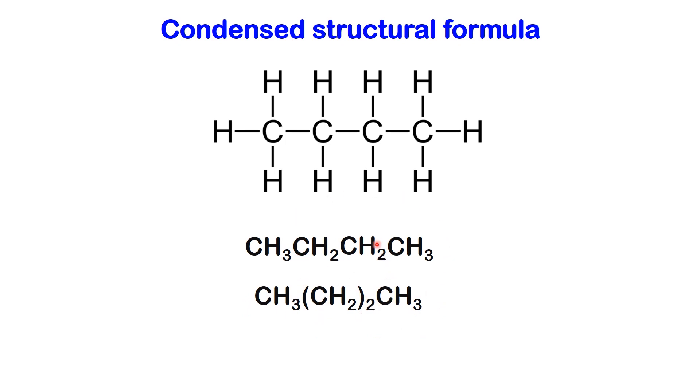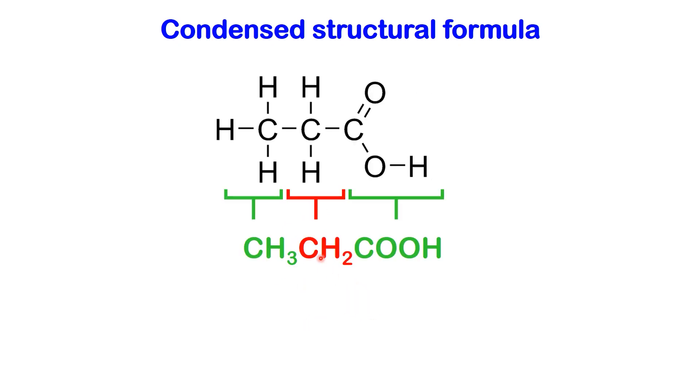This representation conveys the same information more succinctly, occupying less space. Next, let's examine the example of acetic acid. Similarly, we'll work from left to right to assign the condensed structural formula in this molecule. Starting from the left, there is a carbon attached to three hydrogens, which we'll denote as the CH3 group.